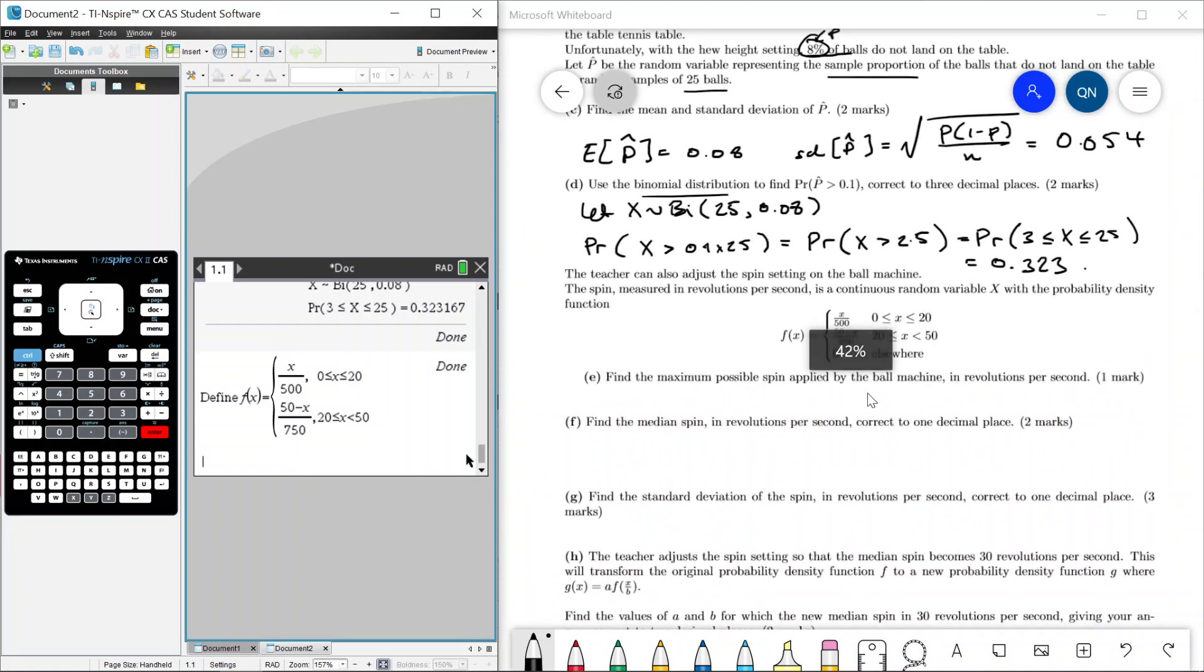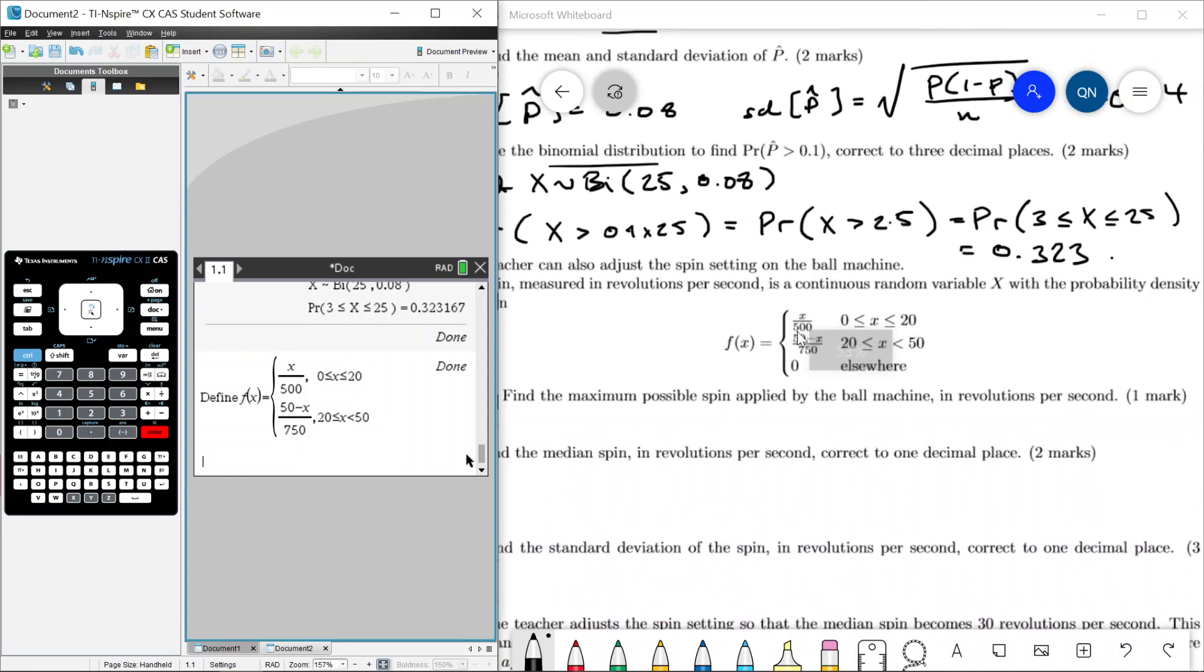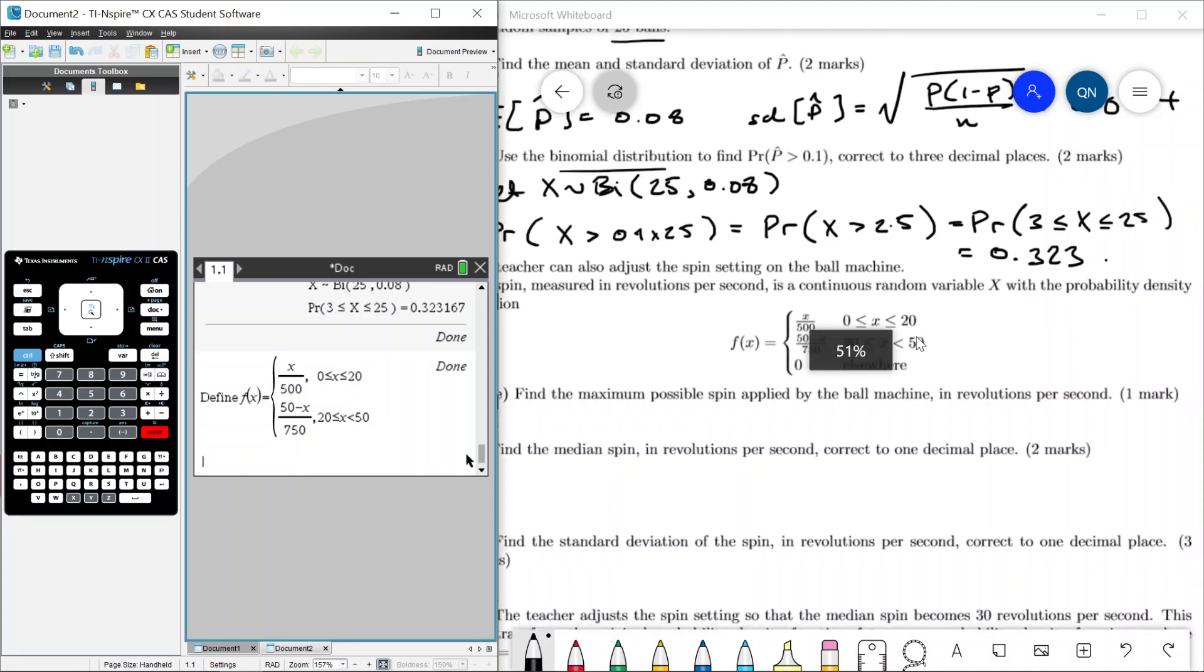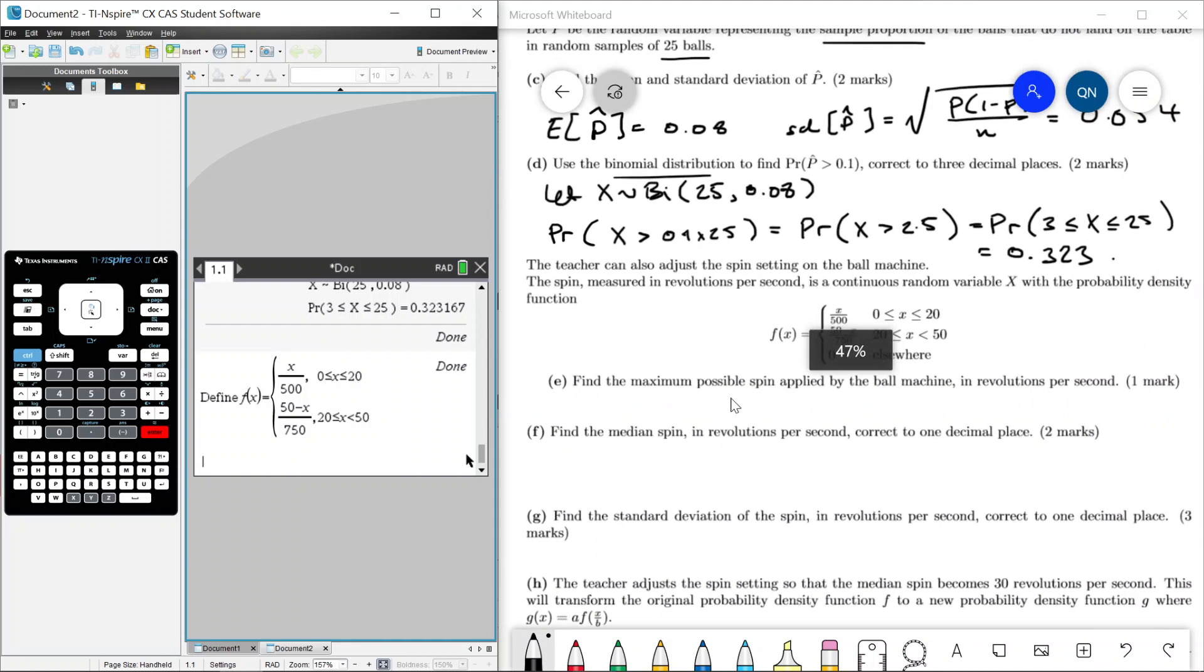Find the maximum possible spin. Well, what is the spin? The spin is represented by x. If you take a look at this distribution, x can be at most, well it can be really anything, but for that probability to exist it can be at most 50 because anything above 50, the probability is zero. So can't really happen. So yeah, it's going to be 50.